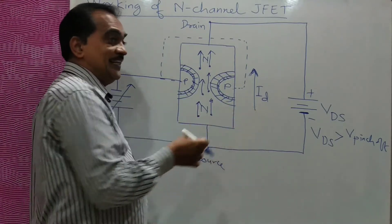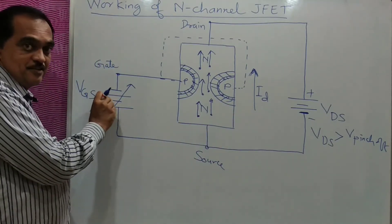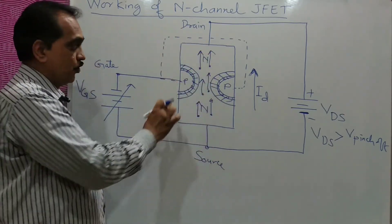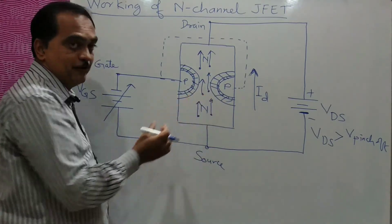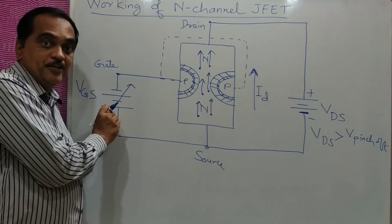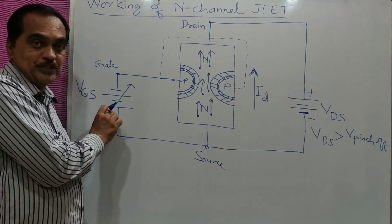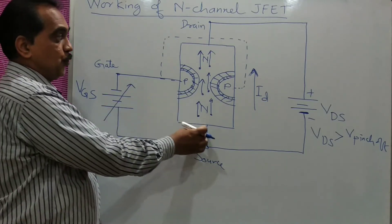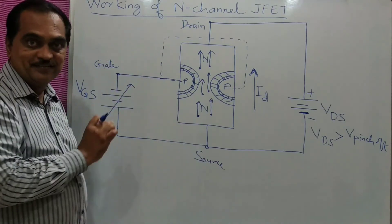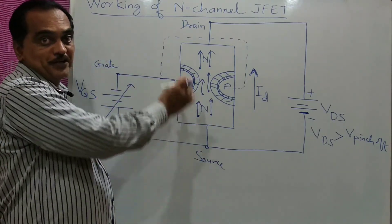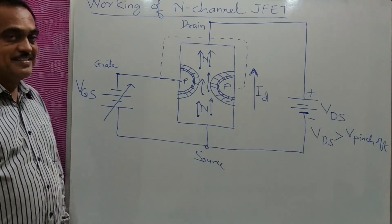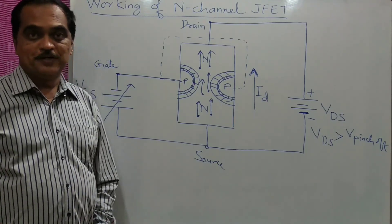That means the drain current will decrease. So by increasing this reverse bias gate-source voltage, you decrease the drain current, because the depletion layer increases and the channel width becomes smaller. This means the drain current is controlled by variation of the gate-source voltage VGS. So this is a voltage-controlled device — voltage is controlling the current of the JFET. This is your N-channel JFET.